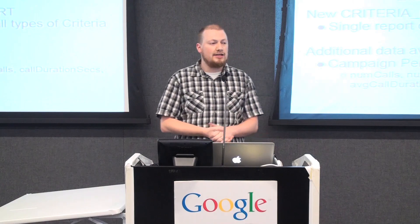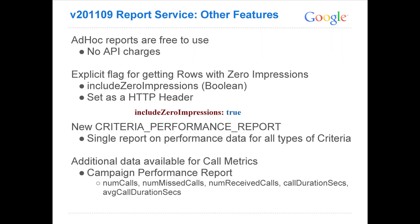We also have an explicit flag for getting rows with zero impressions. In v21909, we will not include zero impression rows unless you explicitly add this header and set it to true.